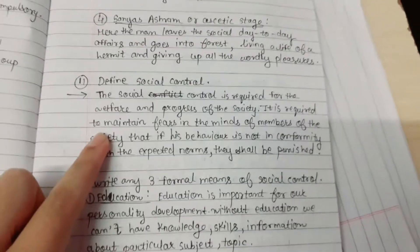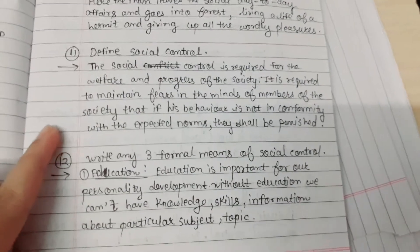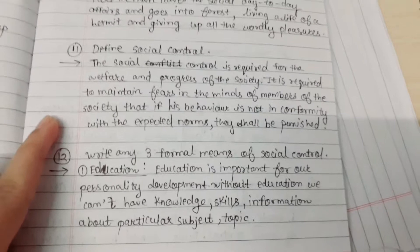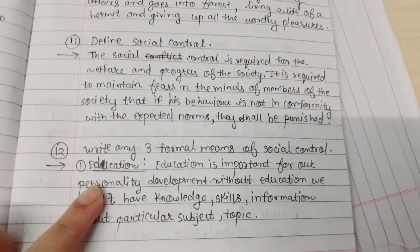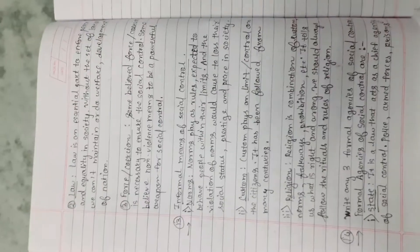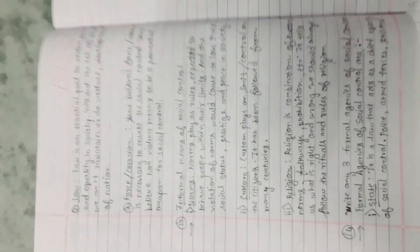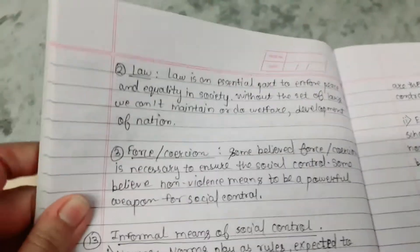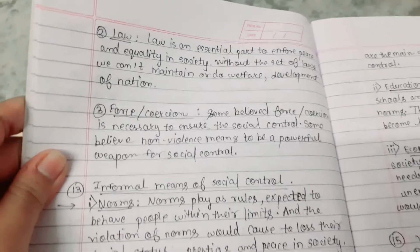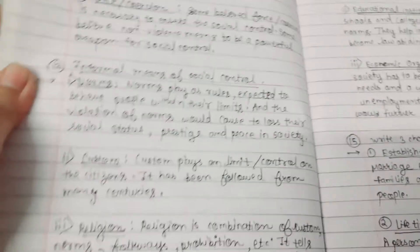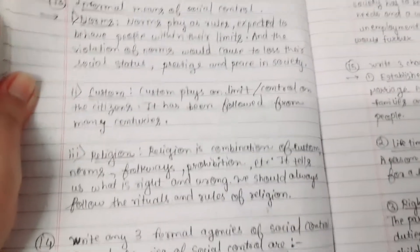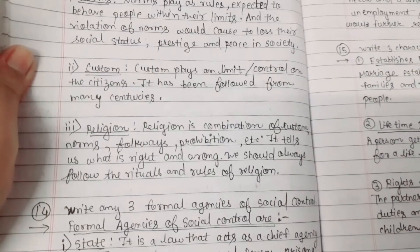Define Social Control. Write the three Formal means of Social Control: Education, Law, and Force and Coercion. The Informal means of Social Control are: Norms, Custom, and Religion.